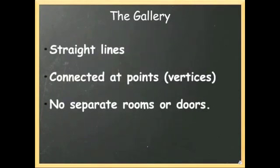First, polygonal means that the curve is made up of a series of straight lines. Those lines are connected at points, which we'll call vertices. And finally, closed means that the inside of the floor plan can't be divided into rooms, and there can't be any doors to the outside.